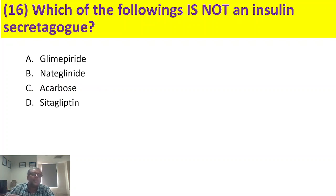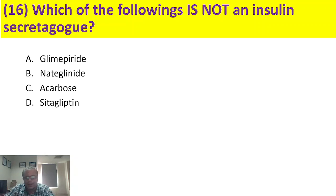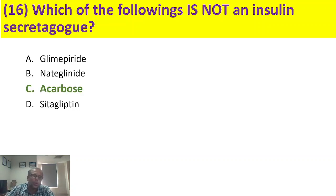Which of the following is not an insulin secretagogue? Glimepiride is a sulfonylurea — it is an insulin secretagogue. Nateglinide is a meglitinide — it is also a secretagogue. Sitagliptin is a DPP-4 inhibitor — it is also an insulin secretagogue. But acarbose is an alpha-glucosidase inhibitor, so it is not an insulin secretagogue. The answer is C, acarbose.